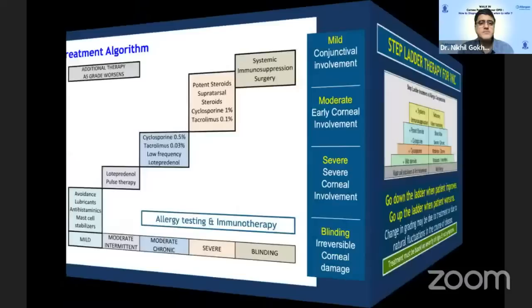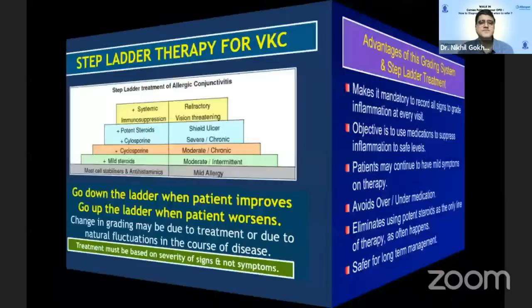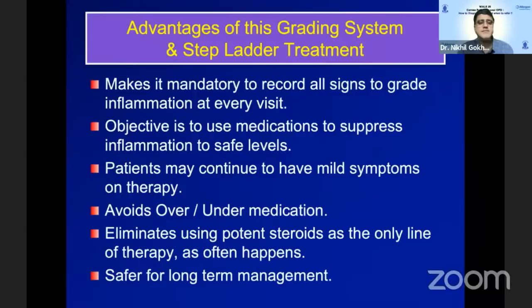We need to treat patients in a stepladder pattern, grade them at every visit, and go up the ladder if inflammation is not controlled. Once inflammation is under control, we can go down the ladder and use safer, less potent medications. Using a grading system to adjust treatment in a stepladder fashion will help avoid over- or under-medicating patients, optimally medicating so that side effects of under and over-treatment are balanced for safe long-term management.